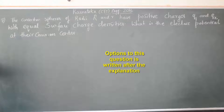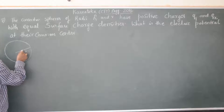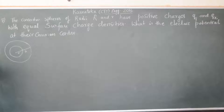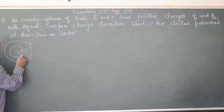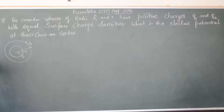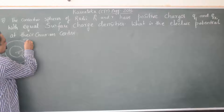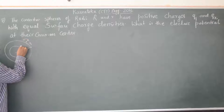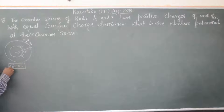There are two concentric spheres. The first sphere has a radius of capital R. The second sphere has a radius of small r, and they have charges Q1 and Q2 respectively. It is also given that they have equal surface charge densities — that is, sigma_R equals sigma_r.